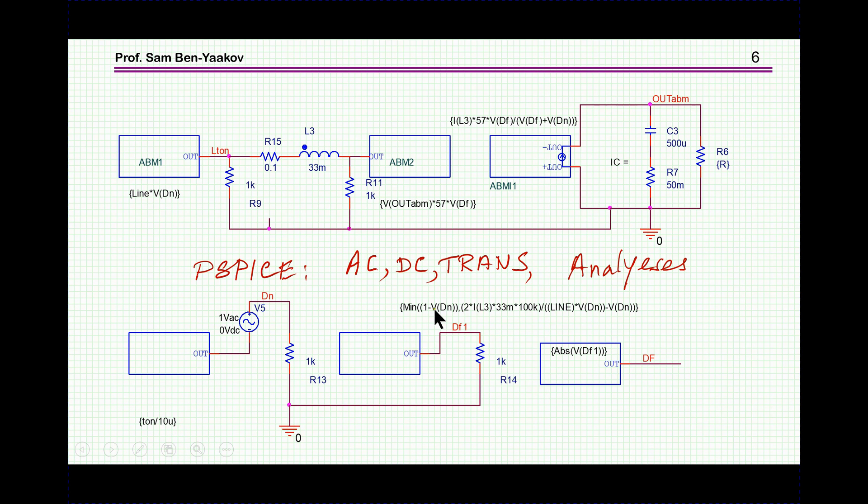And then, I have here the so-called duty cycle generator, it's another ABM, which is just minimum of these two, that is, 1 minus VDON, etc. This is this expression that we have seen before, here it is minus VDON. And the output then has this correction, VDOFF, VDON. So this model now is correct for both DCM and CCM.